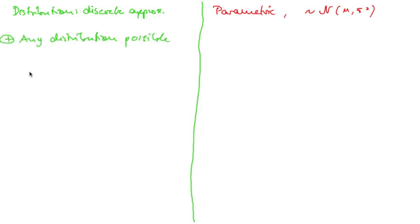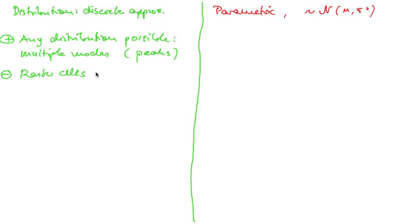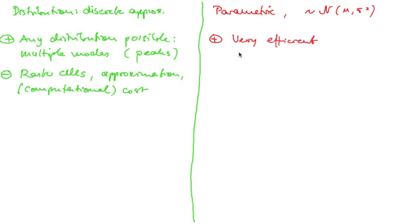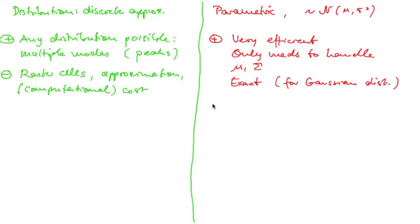Now if we compare those two, we see that with the histogram filter, any distribution is possible, especially distributions having multiple modes, meaning multiple peaks. On the other hand, I have to define a discrete raster, and we already discussed that I might want to make them small for better accuracy, but then I will have so many of them rendering computation inefficient. So there's a trade-off between the approximation quality and the cost. On the other hand, my Kalman filter is very efficient — it only needs to deal with the first and second moments. Also, if our distributions are indeed normal distributions, then the representation is exact. On the other hand, we assumed a normal distribution, so we do have only one peak.